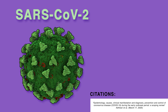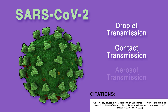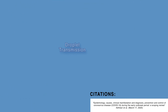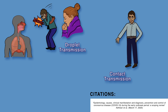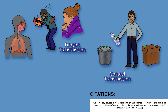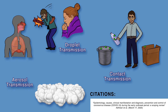Transmission of SARS-CoV-2 occurs via droplet transmission, contact transmission, and aerosol transmission. Droplet transmission occurs when respiratory droplets produced when an infected person coughs or sneezes are inhaled by a person nearby. Contact transmission occurs when a person touches a contaminated surface and then their mouth, nose, or eyes. Aerosol transmission occurs when respiratory droplets containing the virus mix into the air and are then inhaled.